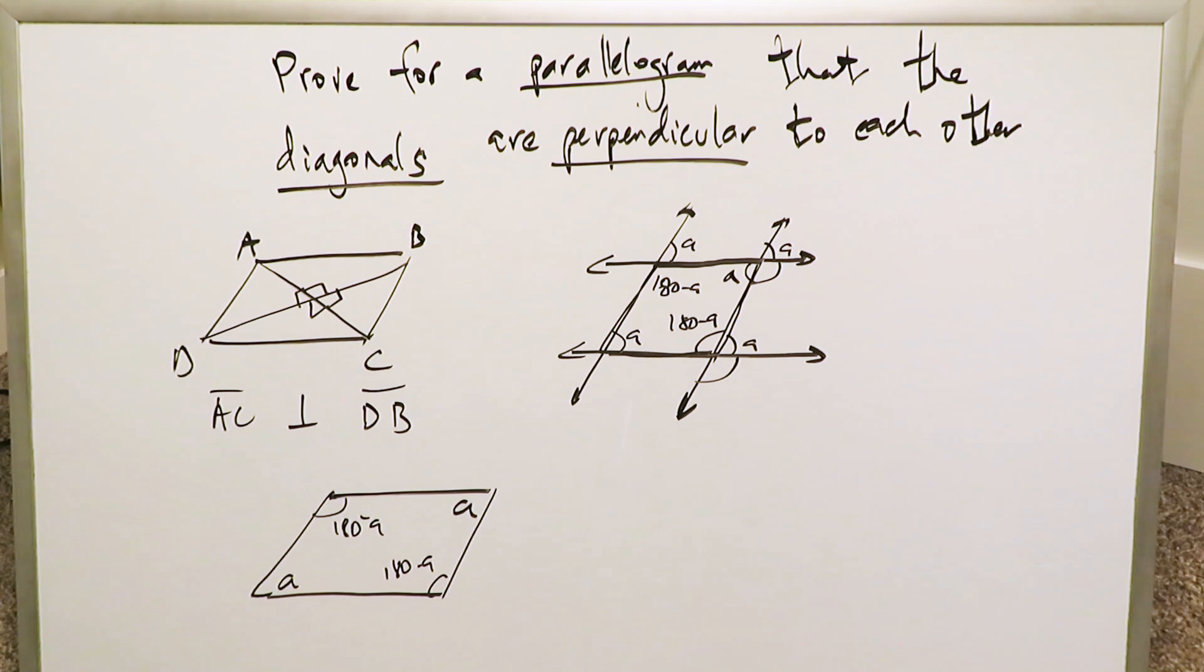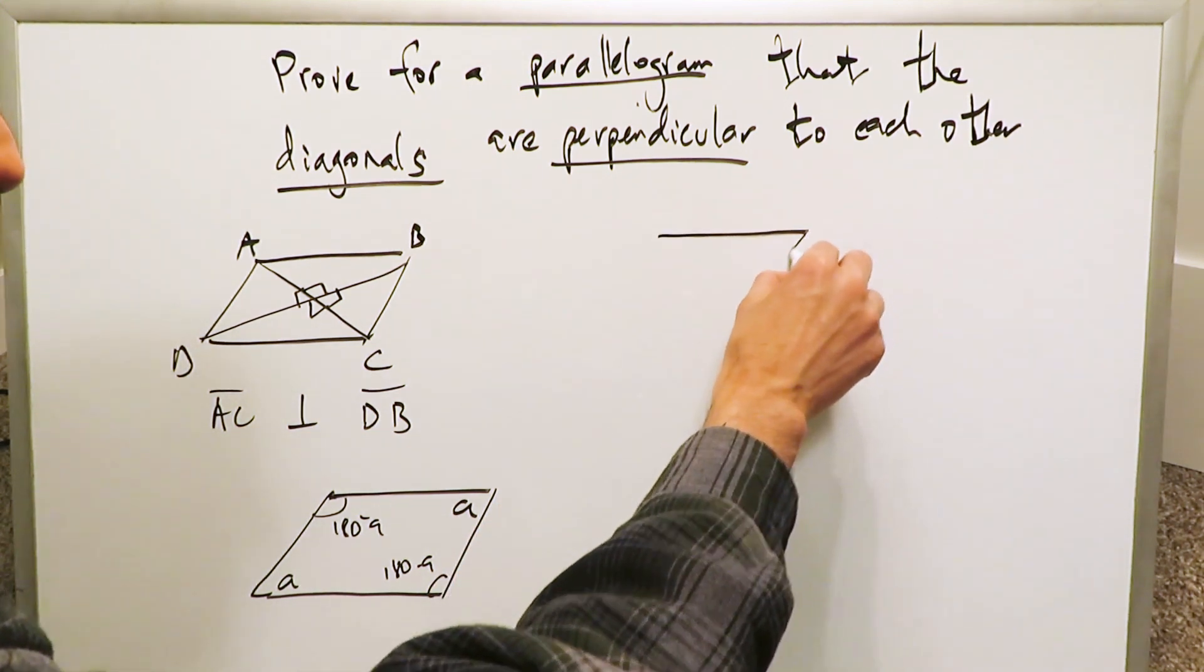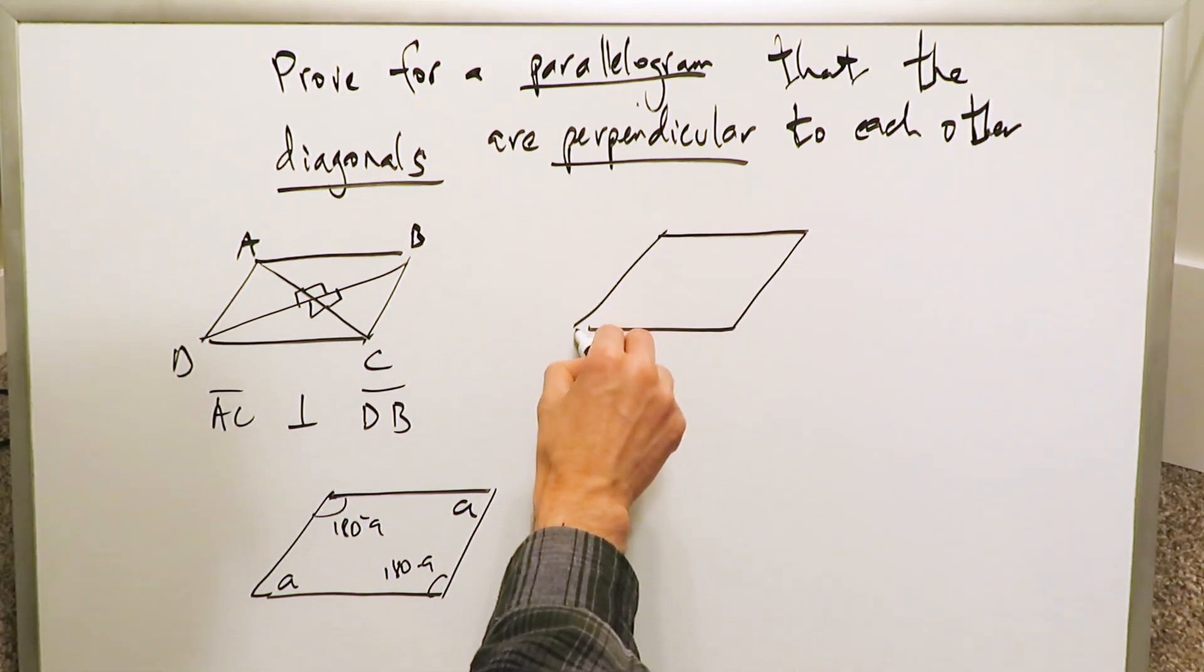A, A, and 180 minus A, 180 minus A. So we've made some good progress over here. What can we do now? I'll draw a parallelogram over here, a new parallelogram, and now I'll draw the diagonals.